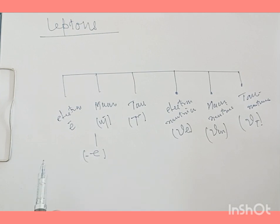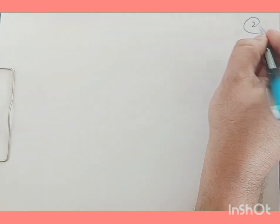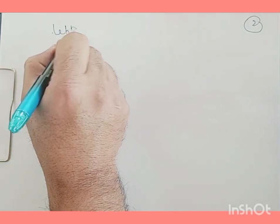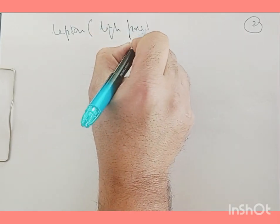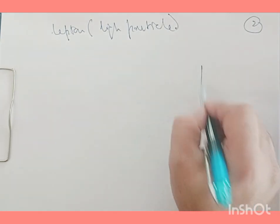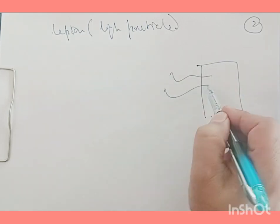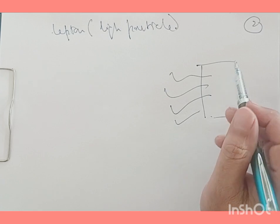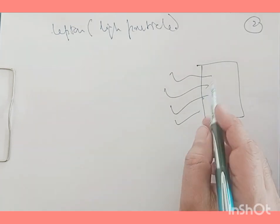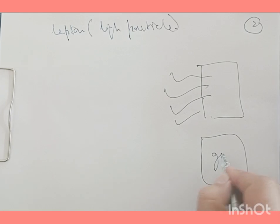The electron was discovered by J.J. Thomson in 1895. It is the lightest of all charged particles and that's why it's called a lepton — lepton means light particle. Electrons are produced by many methods: by supplying energy to metals, in gases, and from beta decay.